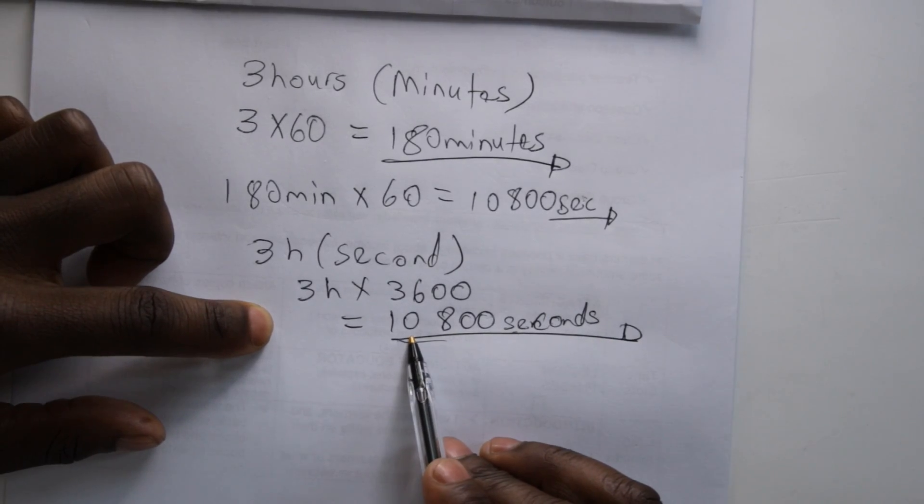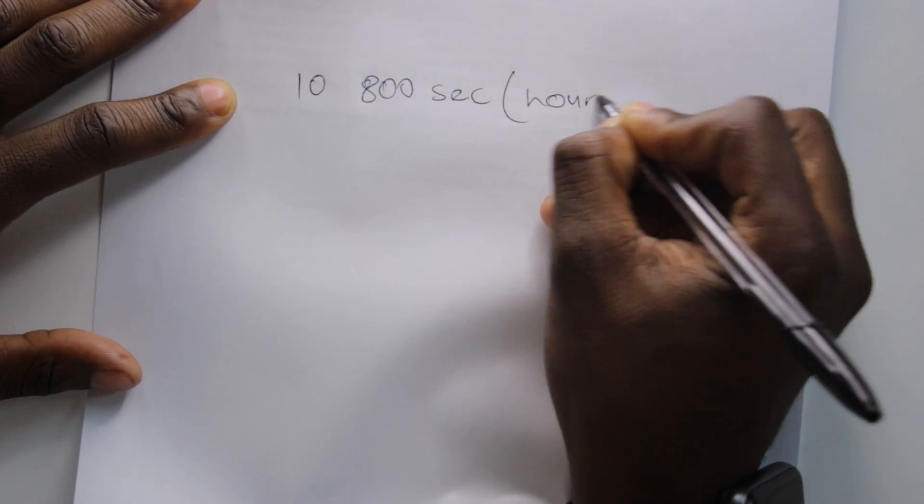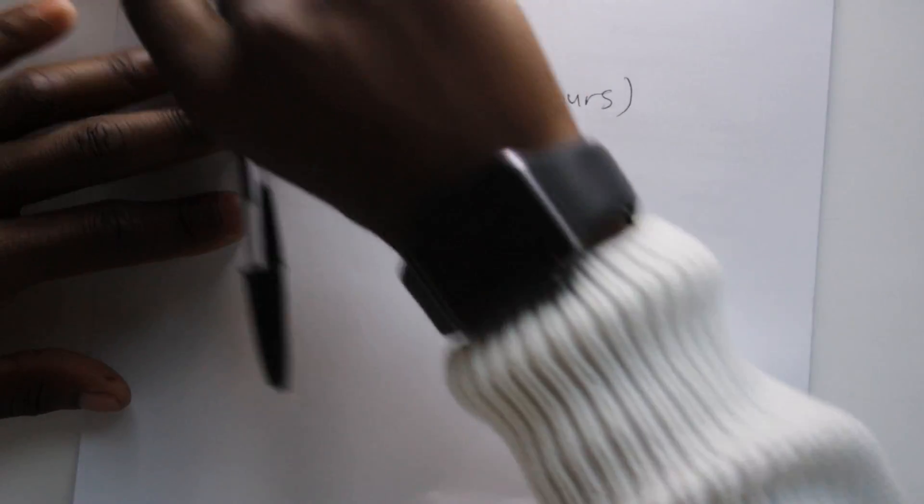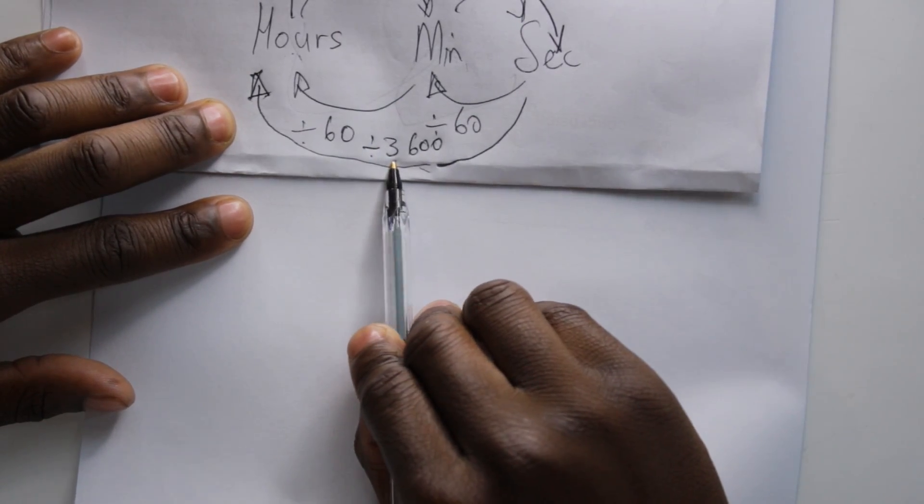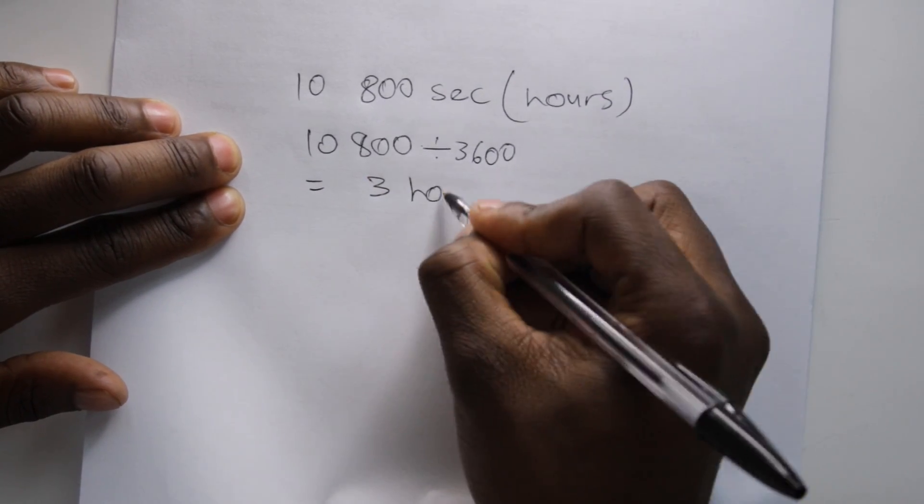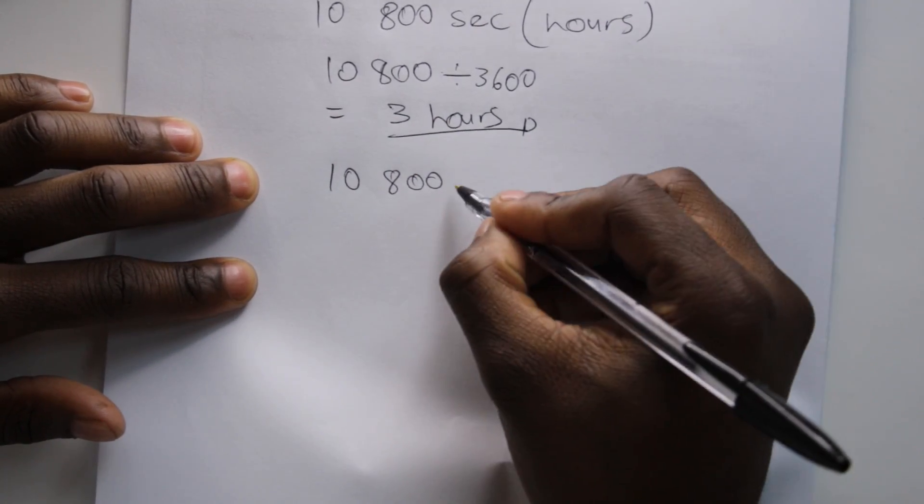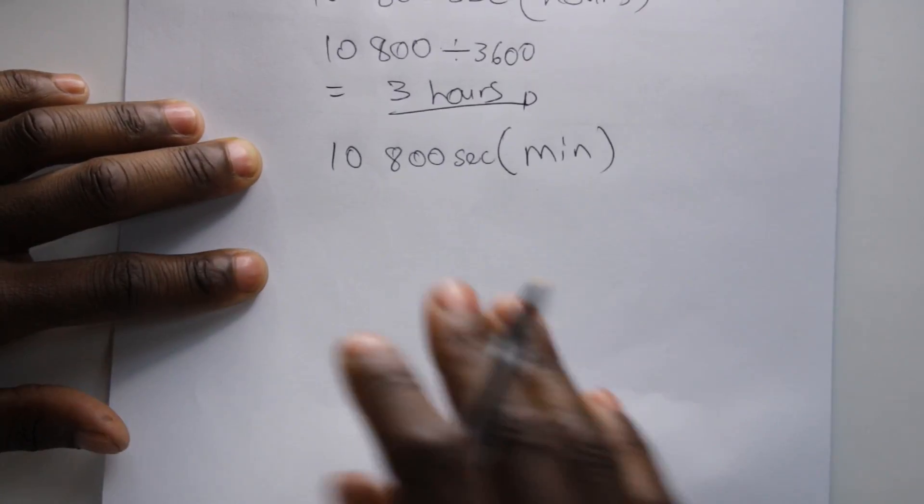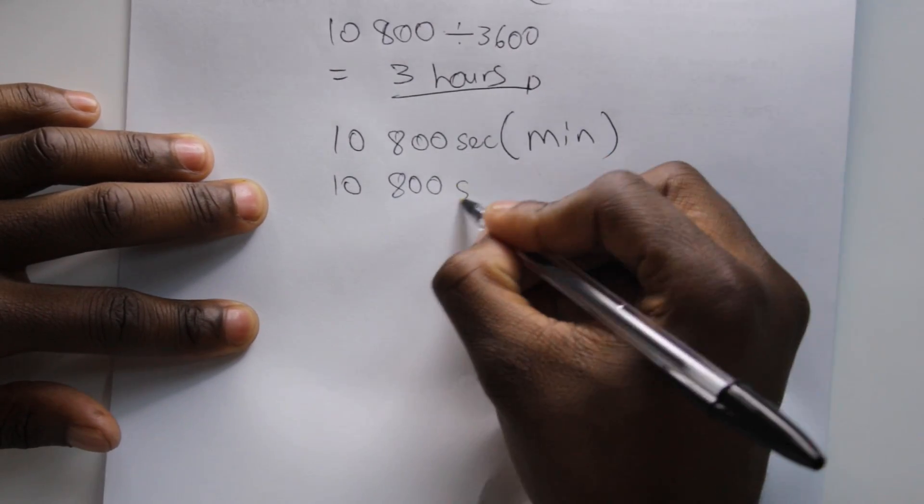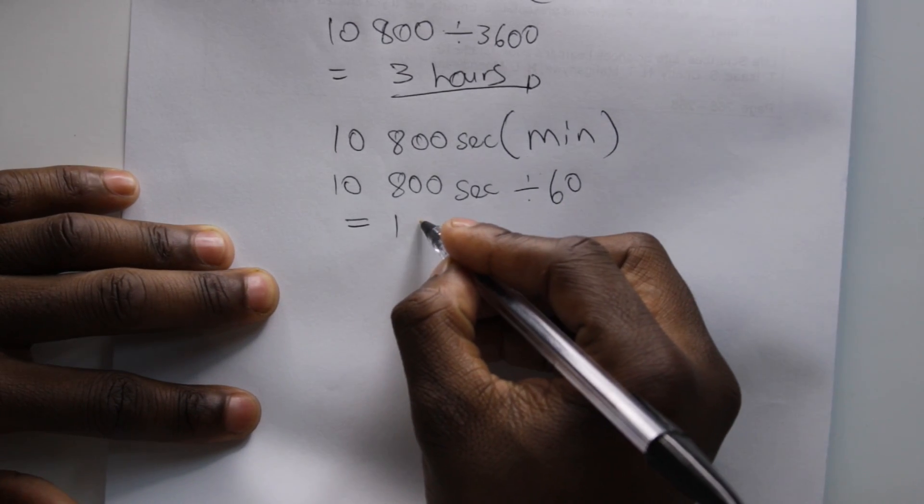Now let's convert back from seconds to minutes and hours. If we are given 10,800 seconds to hours, 10,800 seconds to minutes, 10,800 seconds divided by 60 will give us 180 minutes.